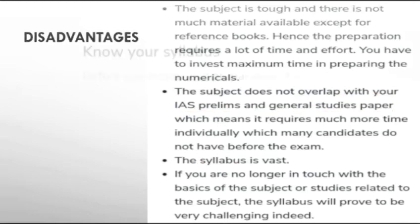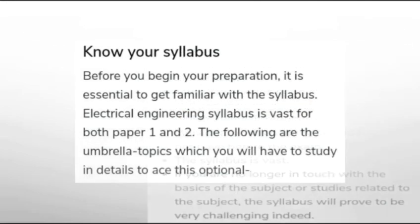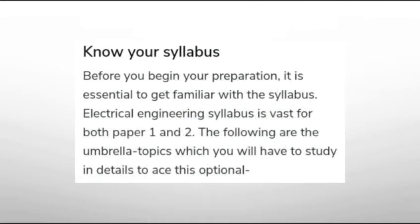If you are willing to take electrical engineering as an optional, the first step is to know your syllabus. Before you begin your preparation, it is essential to get familiar with the syllabus. The electrical engineering syllabus is vast for both Paper 1 and Paper 2. The following are the umbrella topics which you will have to study in detail to ace this optional.